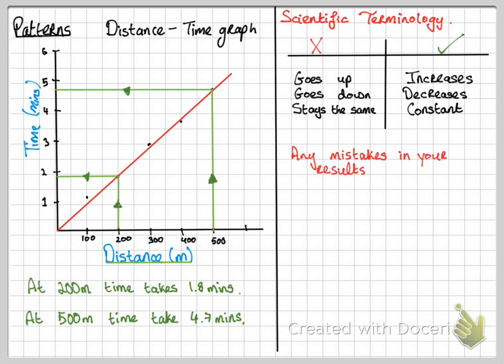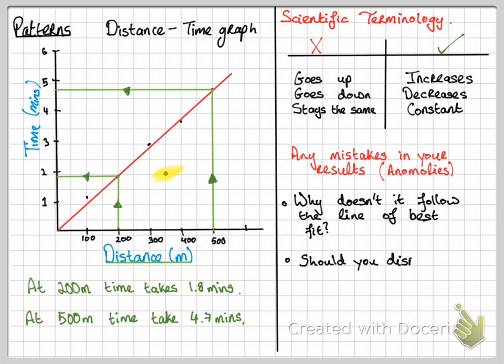If you see any mistakes in your results, so are there any anomalies or mistakes? I've included a little data point here that you can see in yellow. Why doesn't it fit or follow the line of best fit? You might need to have a little look at your results table and see, have you made any mistakes in your results? Does it follow the trend? You need to think, should you disregard this point? You might need to repeat that data point and see, do you get the exact same results?